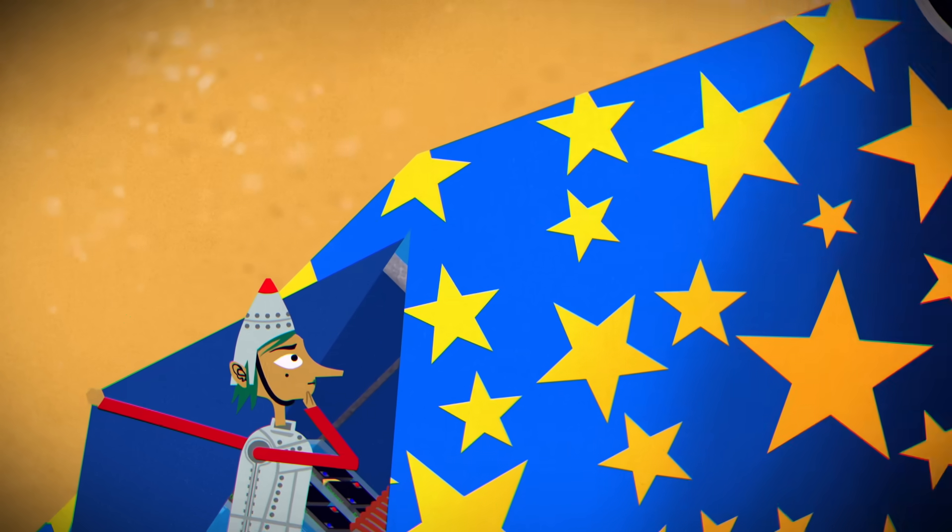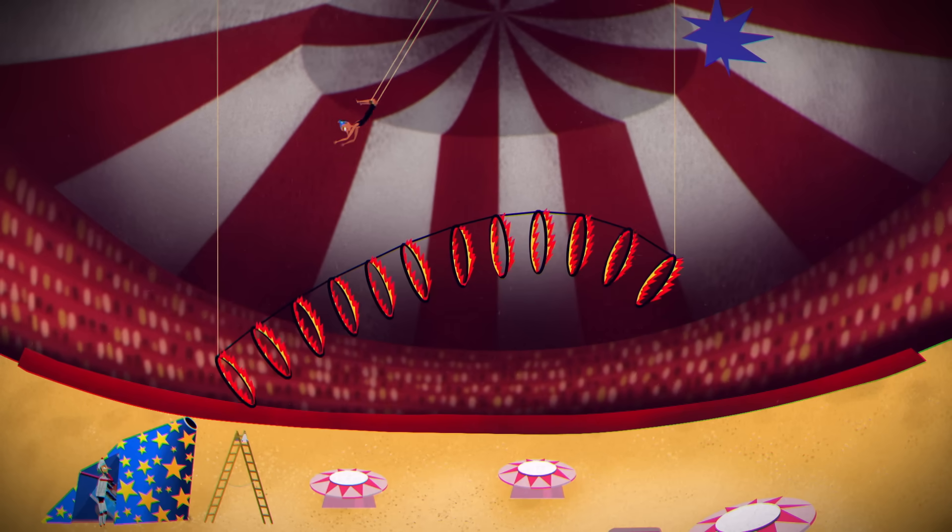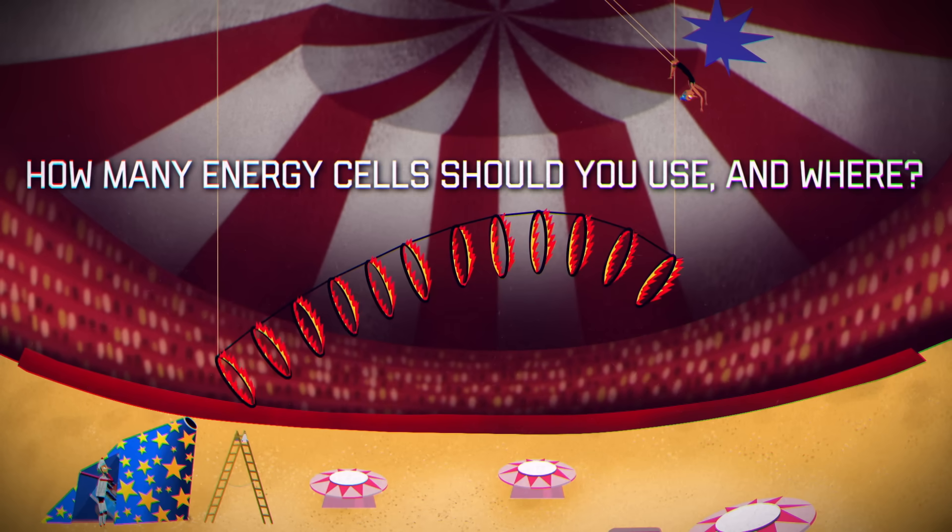Too many or too few, and you and the trapezist are doomed. How many energy cells should you use, and where?